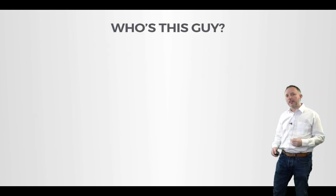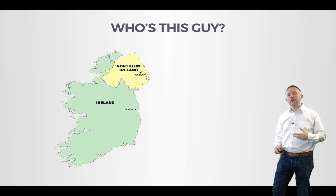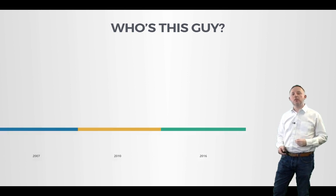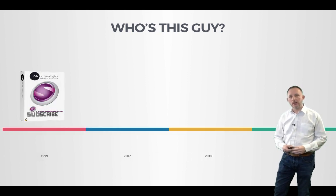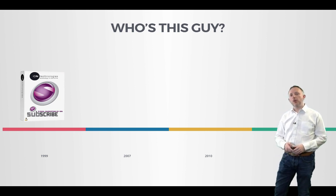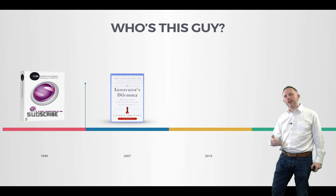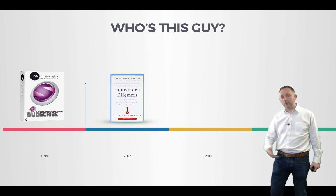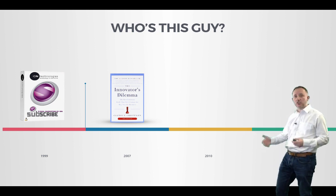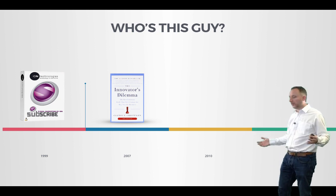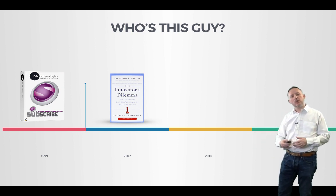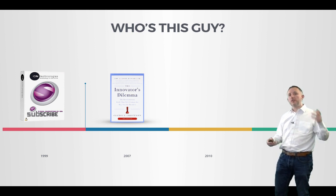A little bit of background as to who I am. I started a company in 1999 based in Ireland. Our first product was an email marketing platform and it sold very well. We were disrupted before 2007 — a more affordable, effective and convenient product hit the marketplace. This was on-demand email marketing services and we were left struggling to understand how our revenues could have dipped so quickly.